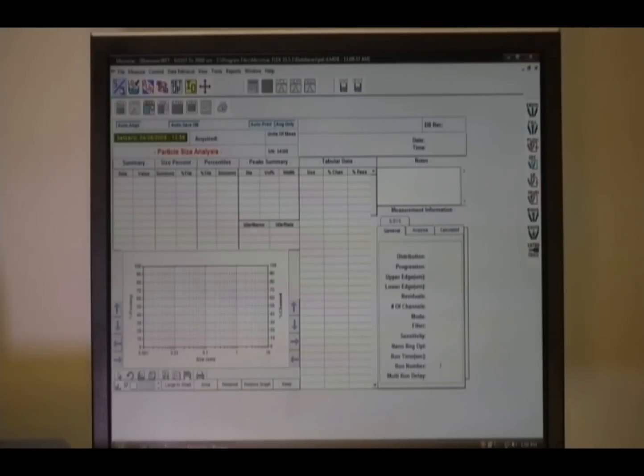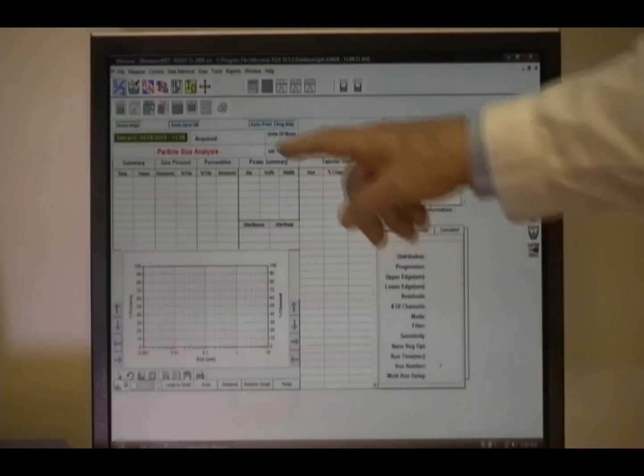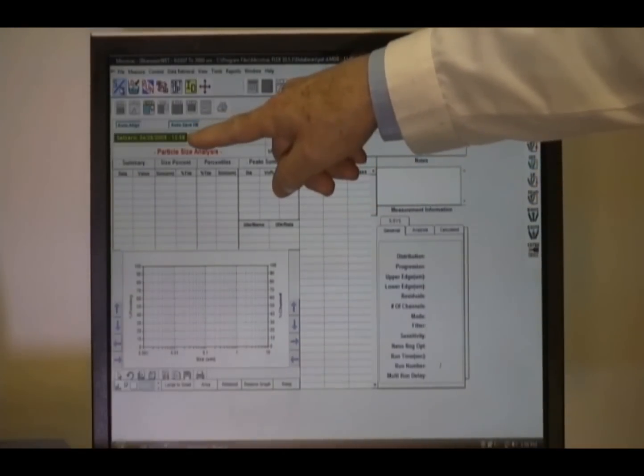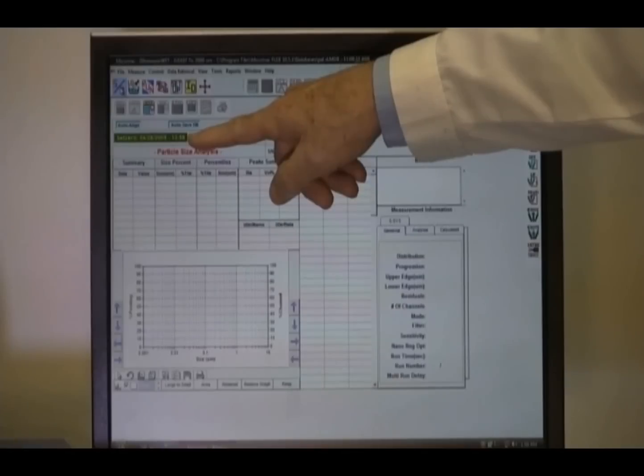Upon completion of the set zero and alignment, if it is successful, it will show a green bar at the left-hand side of the screen. This shows the date and the time of the set zero and shows that all the background information is well within specification. If this were a poor set zero, it would be shown as red.